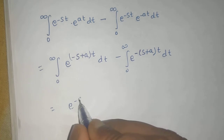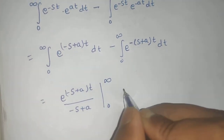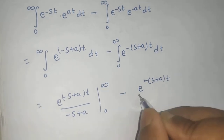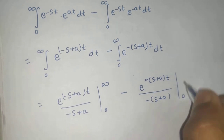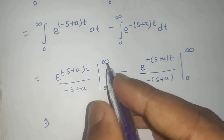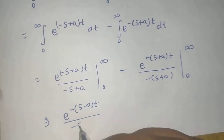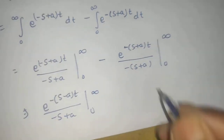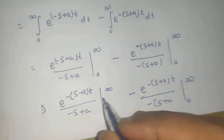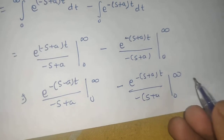Integrating, since the integral of e raised to power AT is e raised to power AT divided by A, you would get e raised to power (A minus S)T divided by (A minus S) evaluated from 0 to infinity, minus the corresponding term with (S plus A). When you put in the upper limit of infinity, e raised to power minus infinity goes to 0, so the upper limit contributes 0 in both cases.